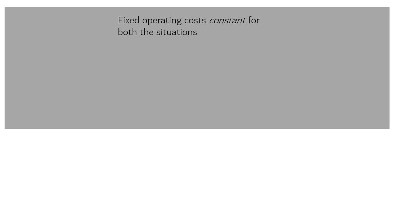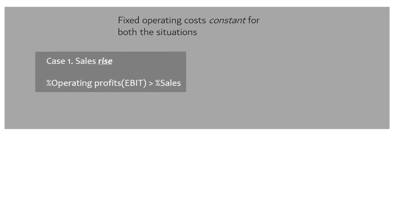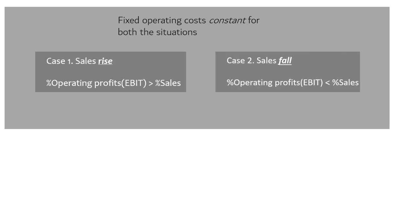In the first situation, when sales increase, operating profit will also increase — in fact it will increase by a greater percentage than the increase in sales. But if sales fall, operating profit will decrease by more than the percentage decrease in sales. So a small change in sales will have a greater impact on operating profits, and this impact is measured by the degree of operating leverage.